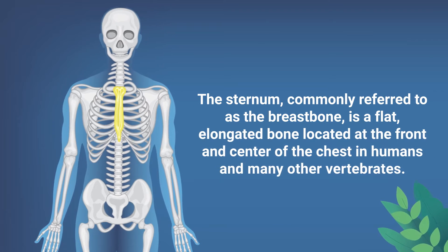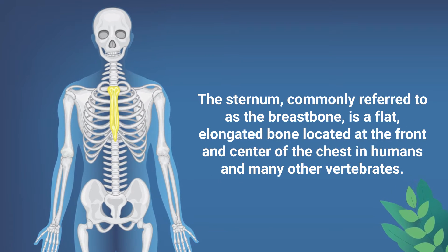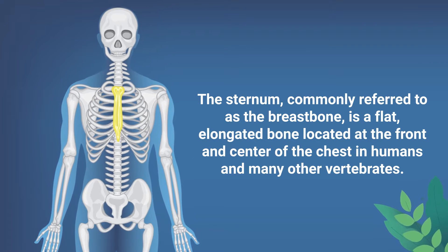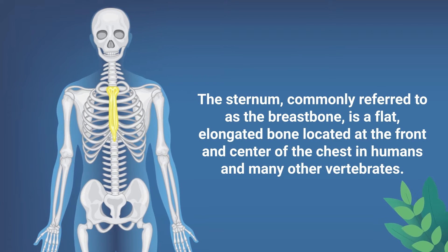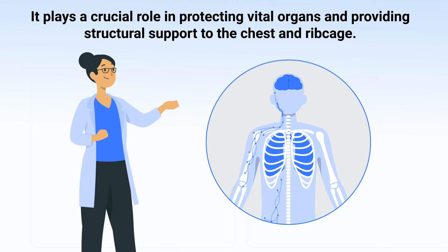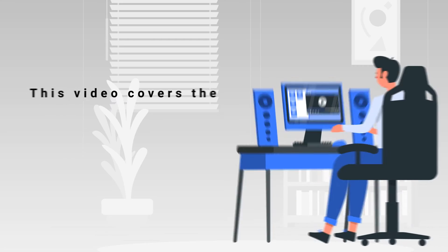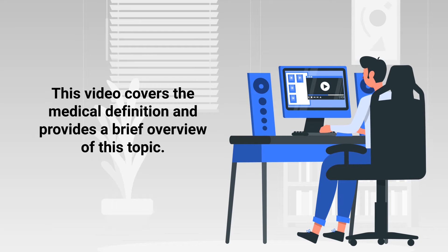The sternum, commonly referred to as the breastbone, is a flat elongated bone located at the front and center of the chest in humans and many other vertebrates. It plays a crucial role in protecting vital organs and providing structural support to the chest and ribcage. This video covers the medical definition and provides a brief overview of this topic.